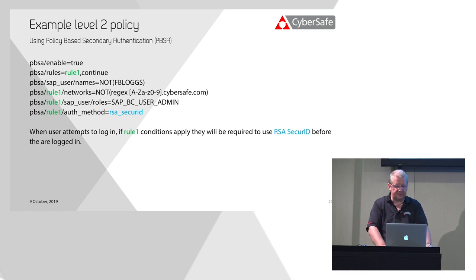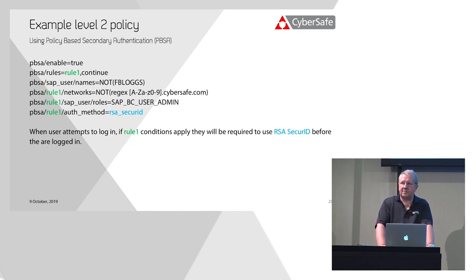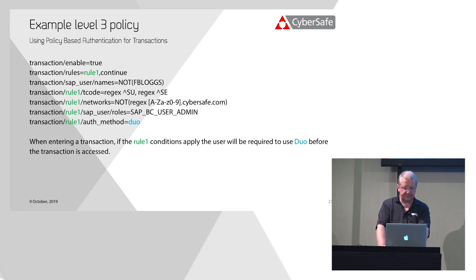Here's an example of what the policy might look like — a very simple level two policy. We're checking whether the user authenticating is not fblogs, and also checking whether it's not coming from the cybersafe.com DNS domain. So if somebody is logging in from outside the CyberSafe network, is not called fblogs, and has a role called satbc_user_admin, it will use RSA SecurID authentication. It's relatively straightforward language — you don't need to be a developer to understand it. It's a series of conditions listed in a rule. For level three policy, it's very similar, with an additional line for transaction code matching — for example, T-code equals regex SU, applying to all transactions beginning with SU.